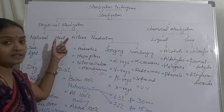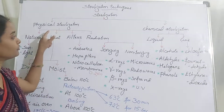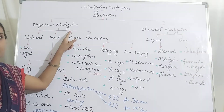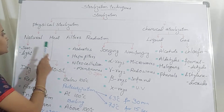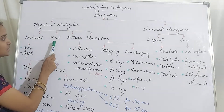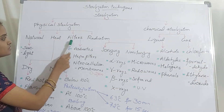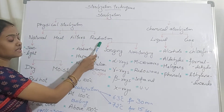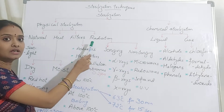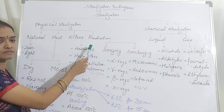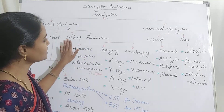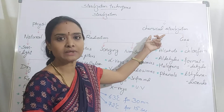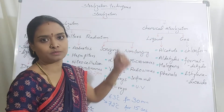We are done with the physical sterilization methods: natural sterilization, heat sterilization, filter sterilization, and sterilization using radiation. Now let's move to the chemical sterilization process.